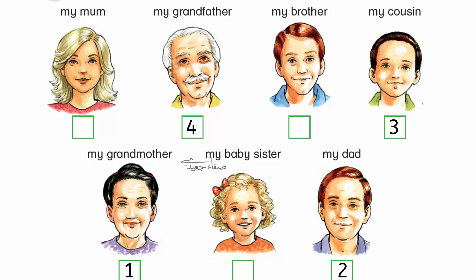5. She has blonde hair and blue eyes. 6. She has red hair and blue eyes. 7. She has blonde hair and brown eyes.